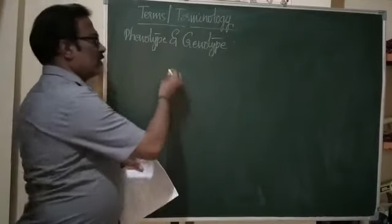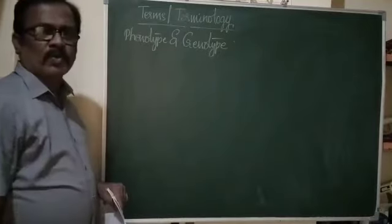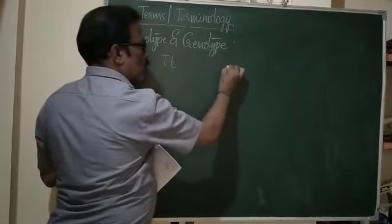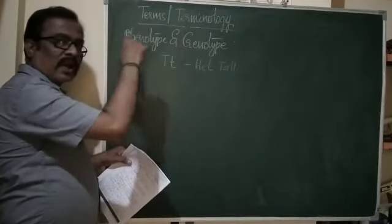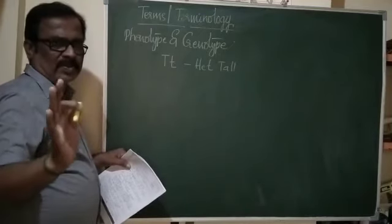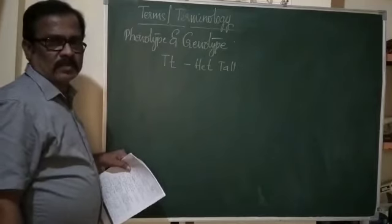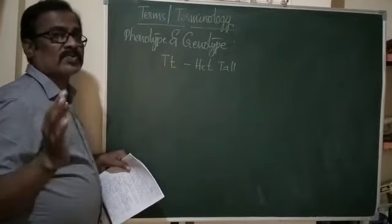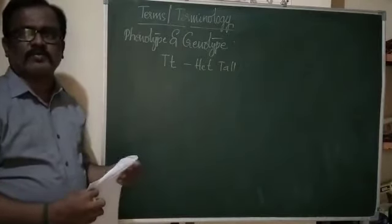For example, in a pea plant, if the genotype is capital T small t — what are you going to say? It is in heterozygous form. Characters expressed using genes are called genotype. But just by observing the characters externally, that is called phenotype. Phenotype means group of externally expressed characters, and genotype means the genetic makeup of an individual.